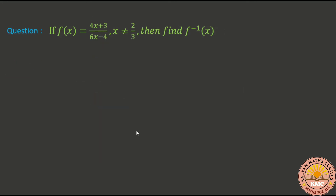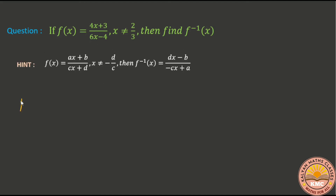Moving to the second question. The function is f(x) = (4x + 3) / (6x minus 4), where x is not equal to 2 by 3. We have to find f inverse of x directly. So a value is 4, b value is 3, c value is 6, and d value is minus 4.